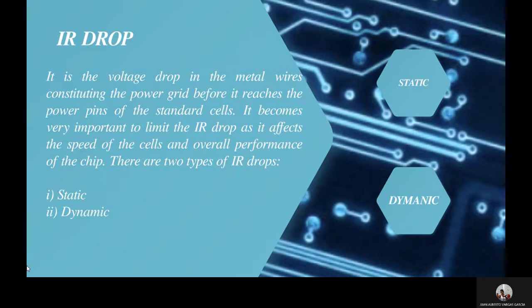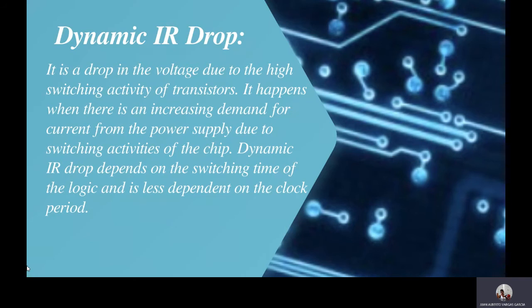Dynamic IR drop is a drop in the voltage due to the switching activity on the transistor. It happens when there is an increasing demand for current from the power supply due to the switching activity of the chip. Dynamic IR drop depends on the switching time on the logic and is less dependent on the clock period.